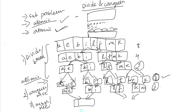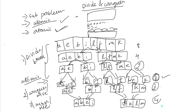We merge the two sets together. The first half gives us A, B, E, I and the second half gives us F, K, L, M. We solved the problem with 4 characters on each side by merging two sub-solutions.